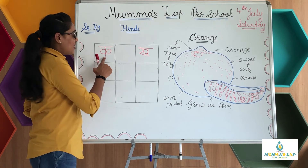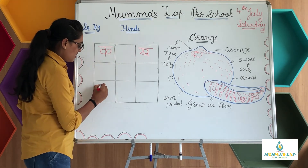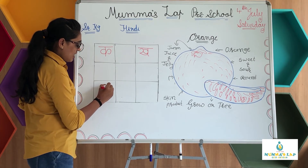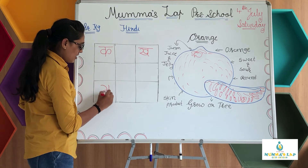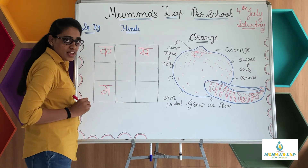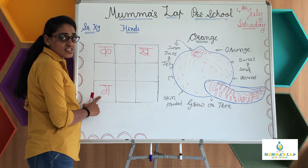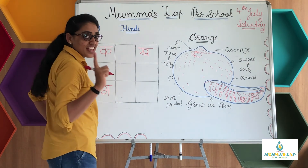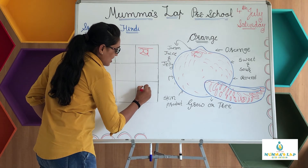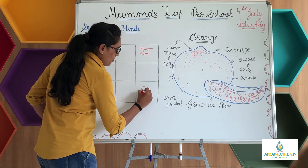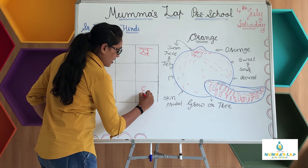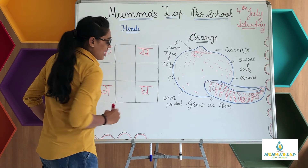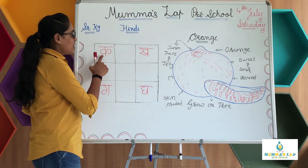Next, kha, kha, gha. Left curve goes inside, then standing line and slipping line — this is gha. Gha se gha. Right curve, join again with right curve, goes up and goes down, and slipping line. Gha se gha.